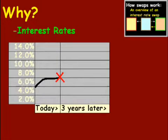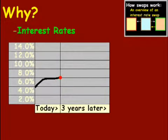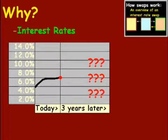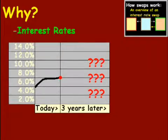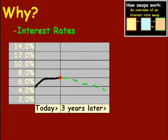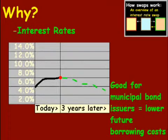Now, I have an interest rate yield curve, and I've highlighted today with an X. The current rate is at 6% in our hypothetical example. Three years later — or 10 or 20 years later — Muni ABC wants to get more financing. They don't know what interest rates are going to do. They could do three things: rates could go down, go up, or stay the same. If rates go down, that's good for municipal bond issuers because it lowers the future cost of borrowing. They can get better financing, provided they're investment grade.